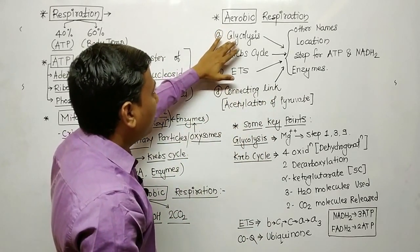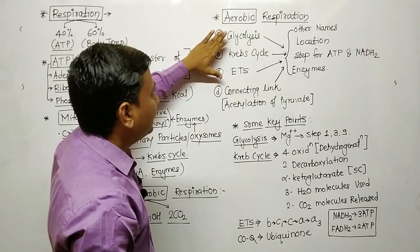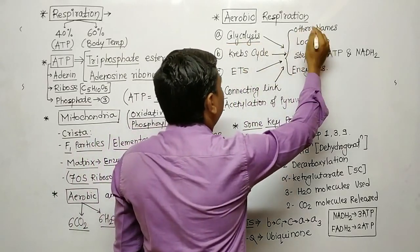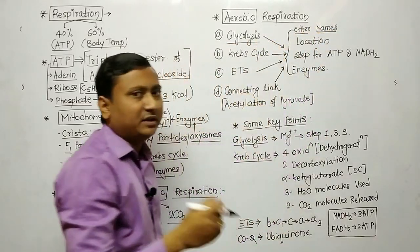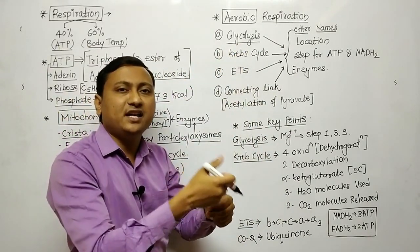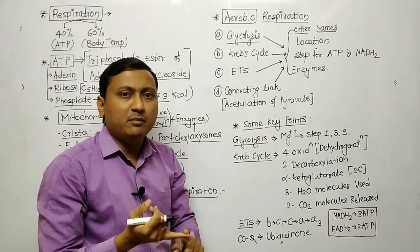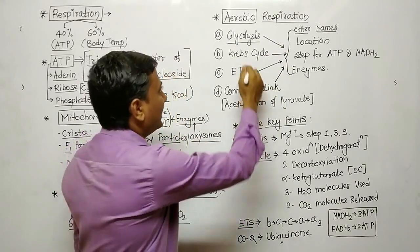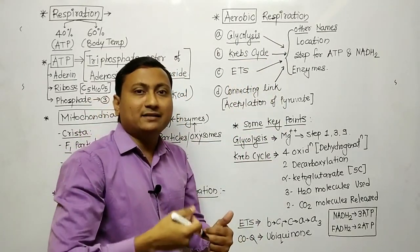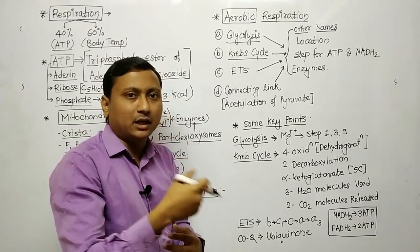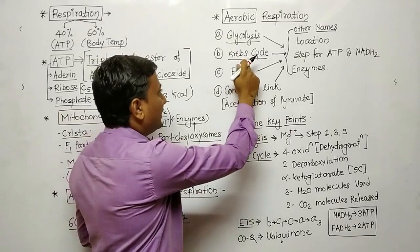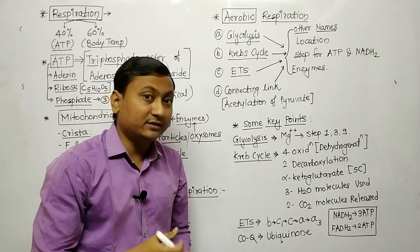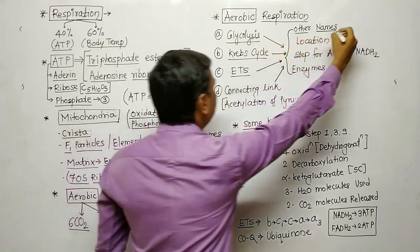Let us start with glycolysis. Glycolysis is also called the EMP pathway — E stands for Embden, M for Meyerhof, and P for Parnas. The Krebs cycle is also called the TCA cycle — Tricarboxylic Acid cycle — or it is also called the Citric Acid cycle. ETS stands for electron transport system, also called the respiratory chain, or oxidative phosphorylation, or terminal oxidation. Prepare these other names.